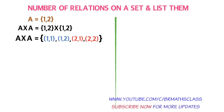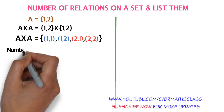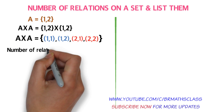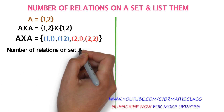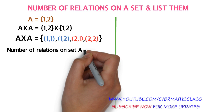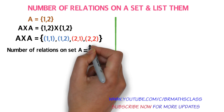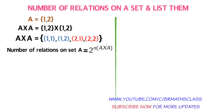The number of relations from set A to B equals 2 to the power n(A×B). So here, the number of relations on set A equals 2 to the power n(A×A). The number of elements in A×A is 4, so that equals 2 to the power 4, which is 16.